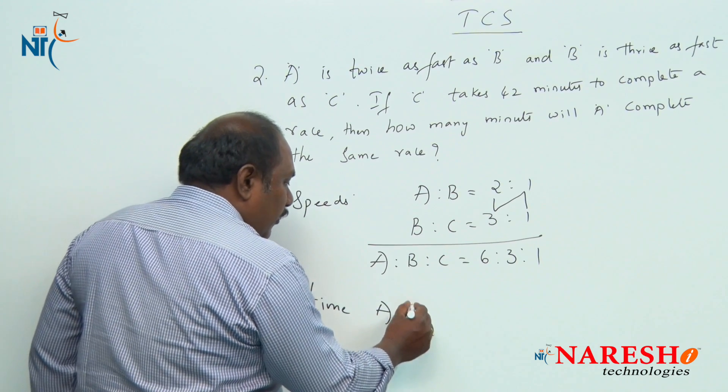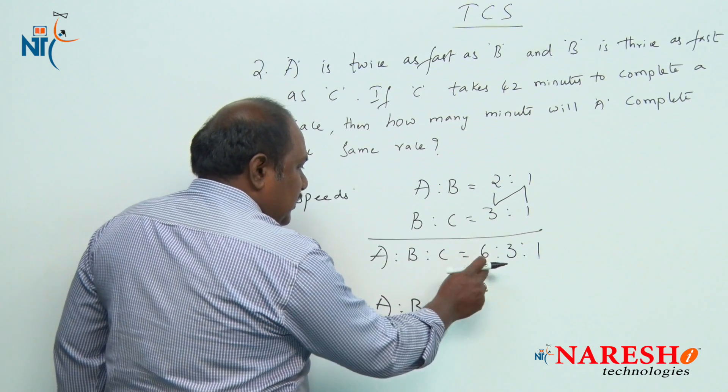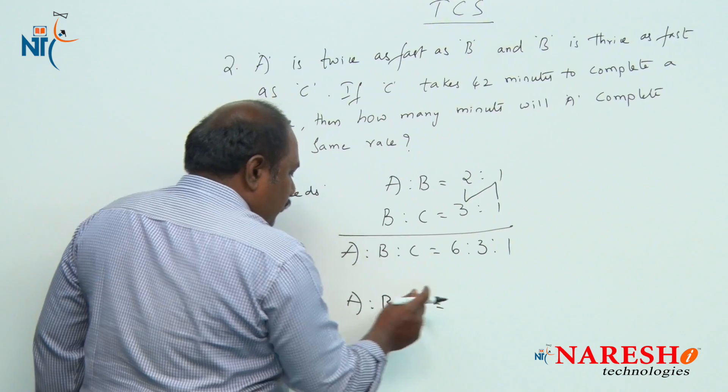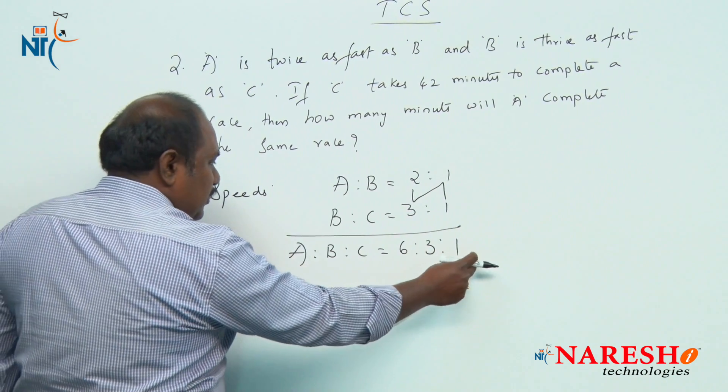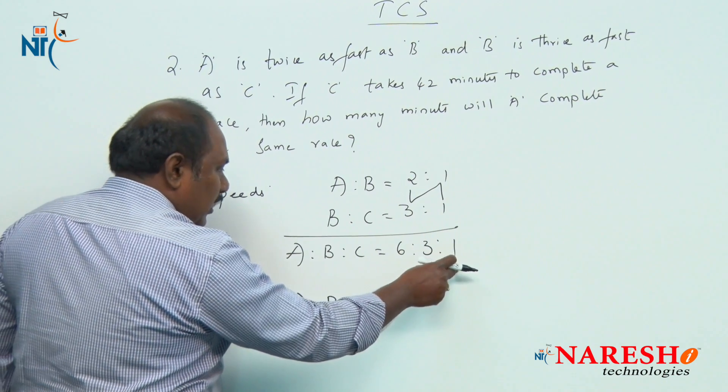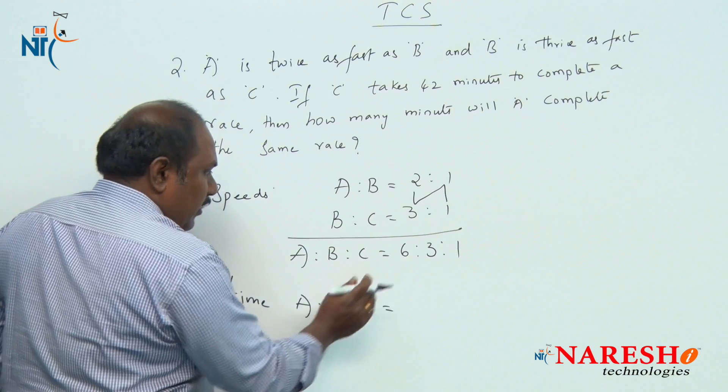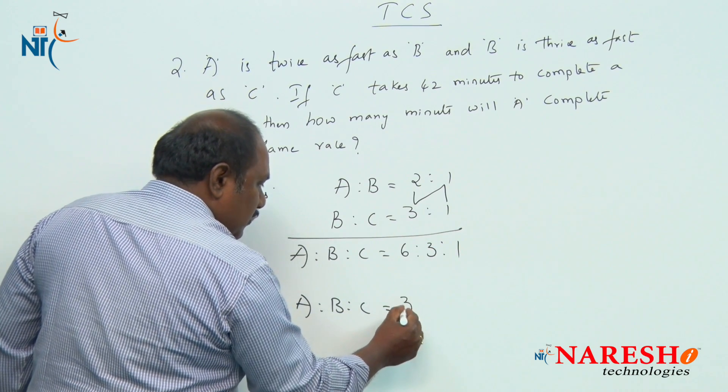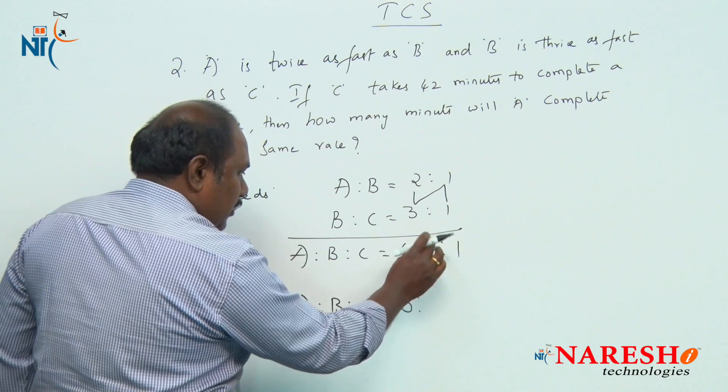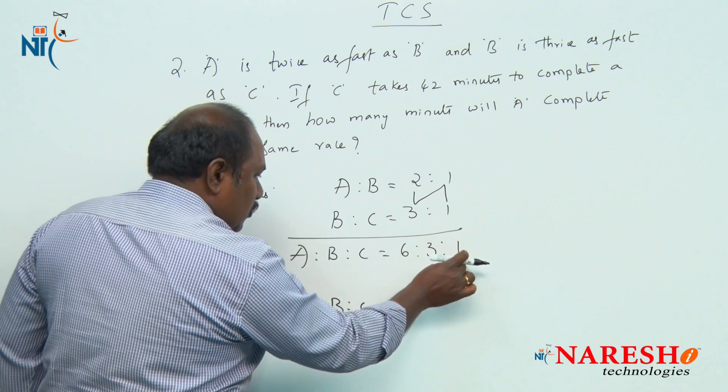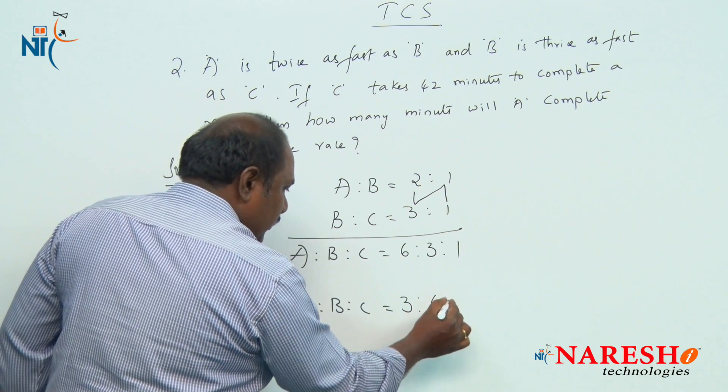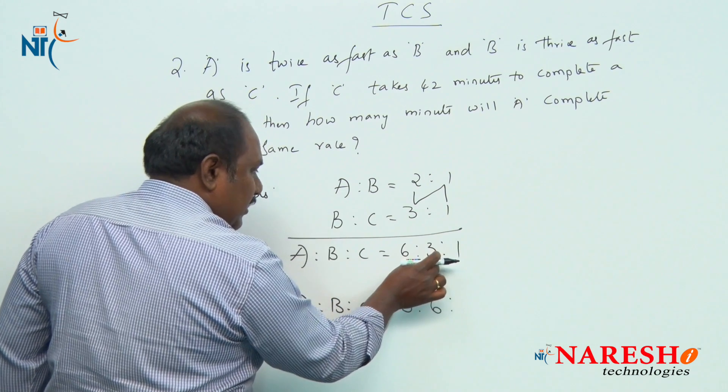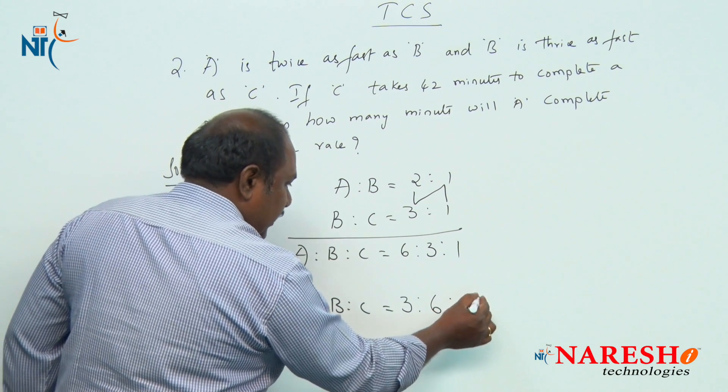What is the inverse ratio of 6 is to 3 is to 1? To find the inverse ratio, the method we have already learned: to find A, close A, multiply the other 2 terms, 3 into 1 is 3. To find B, close B and multiply the other 2 terms, 6 into 1 is 6. To find C, close C and multiply the other 2 terms, 6 into 3 is 18.